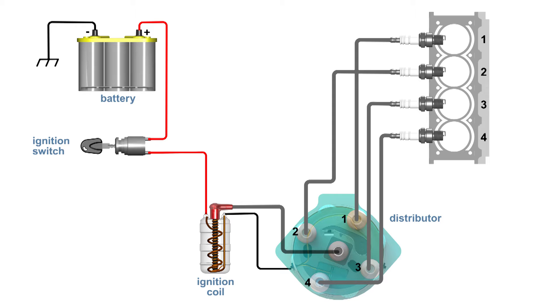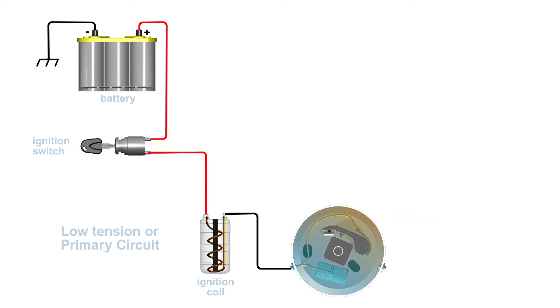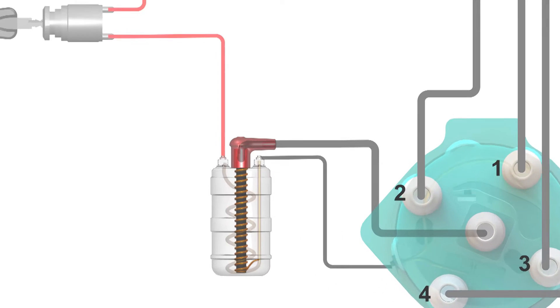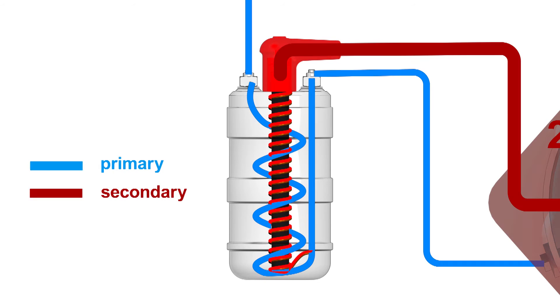There are two parts to all ignition systems: low tension or primary and the high tension or secondary. The ignition coil houses both the primary and secondary circuit.